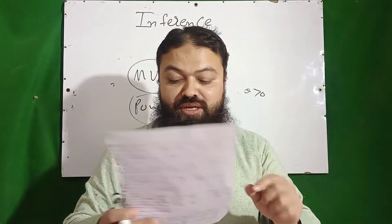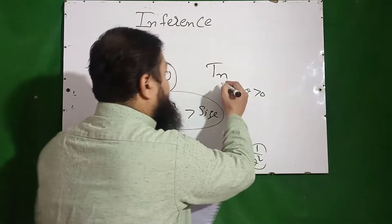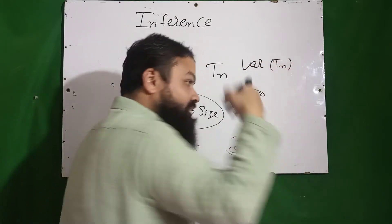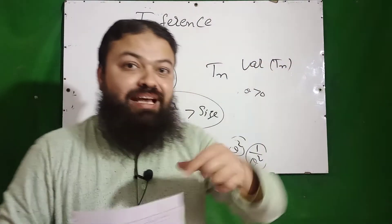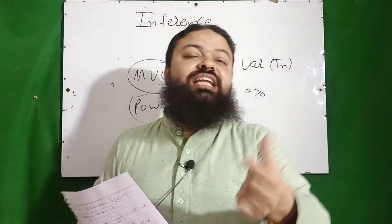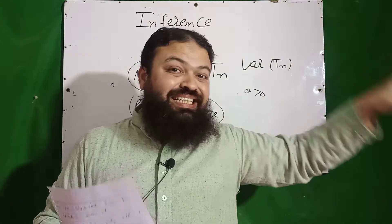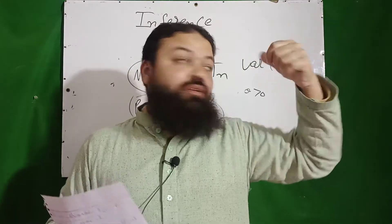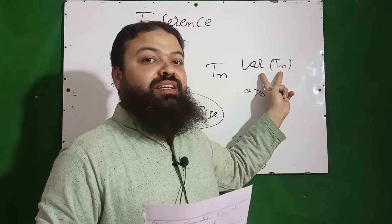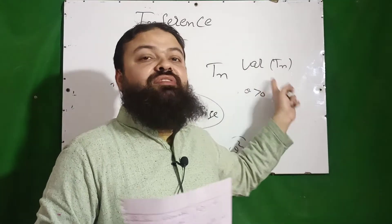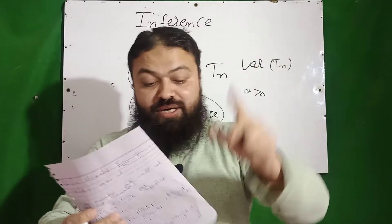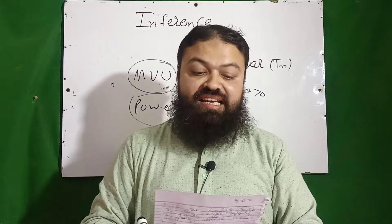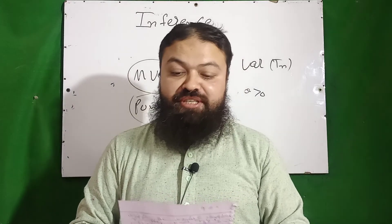Number fifteen: if Tn is an unbiased estimator of θ, the Cramér-Rao inequality gives a lower bound for the variance of Tn. As discussed, the Cramér-Rao inequality tells you what the least minimum value of the variance of Tn will be.